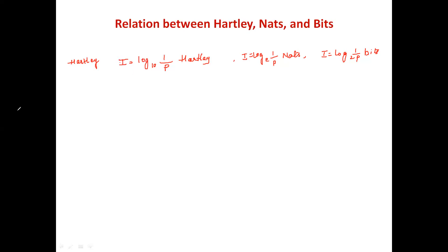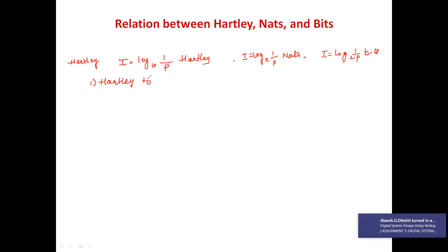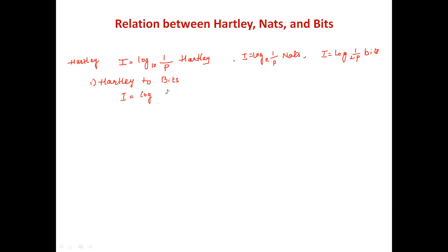Now let us convert hartley to bits. From the above formula, I = log(1/p) to base 10 in hartley. Taking this to the denominator, 1 hartley becomes I divided by log(1/p) to base 10.